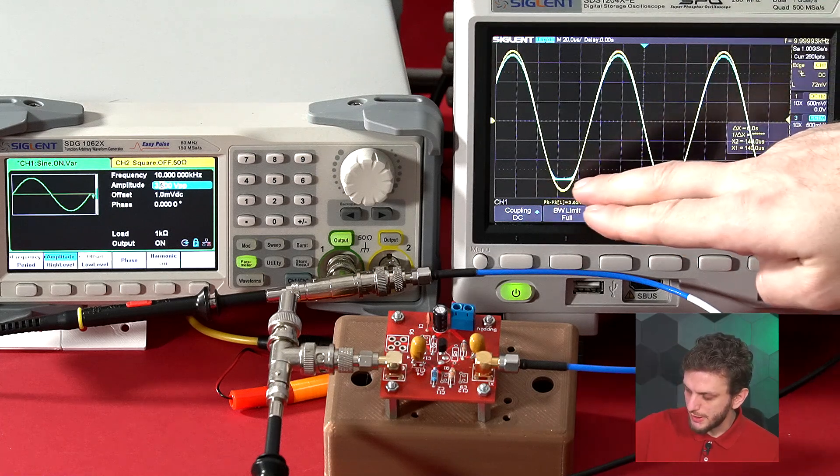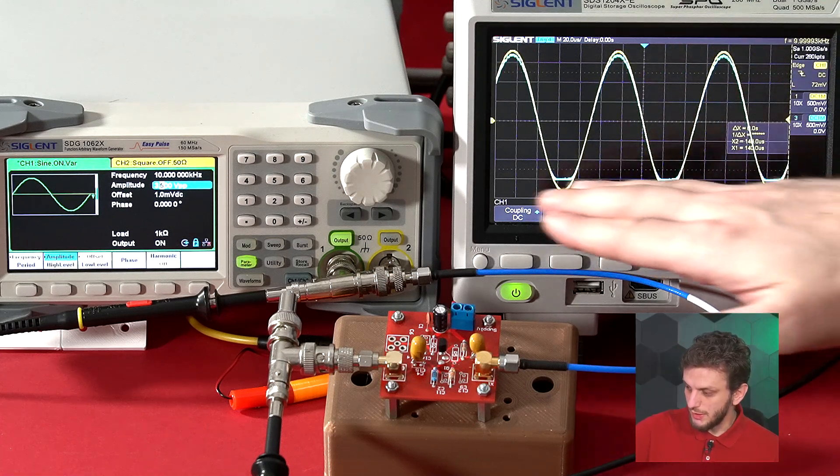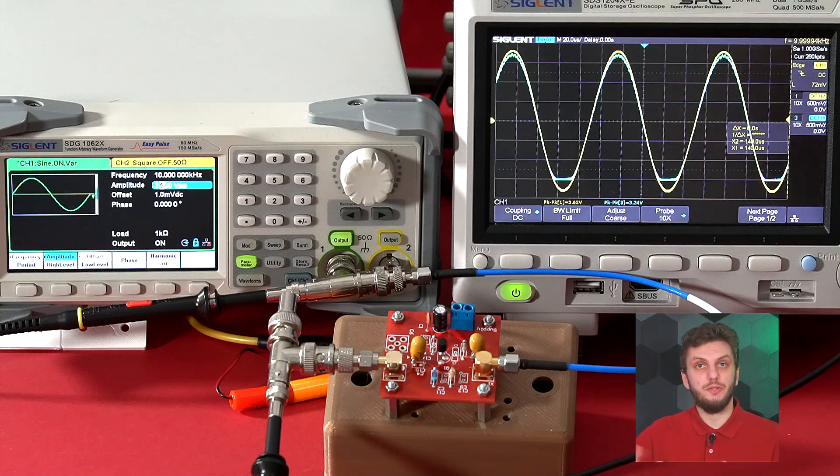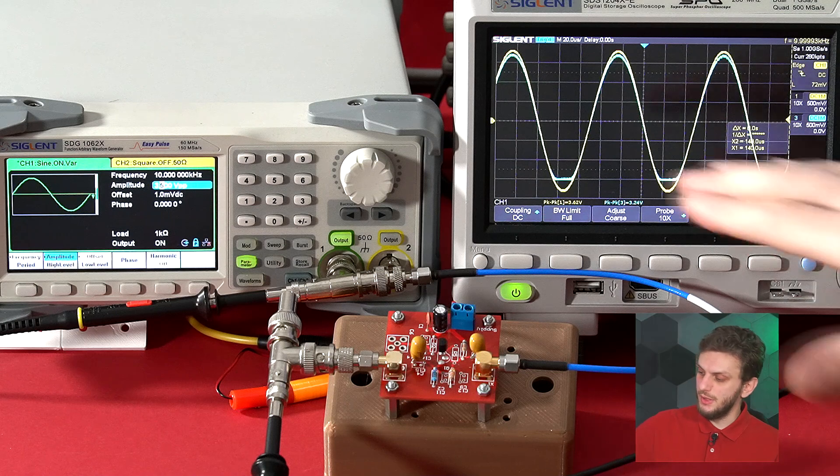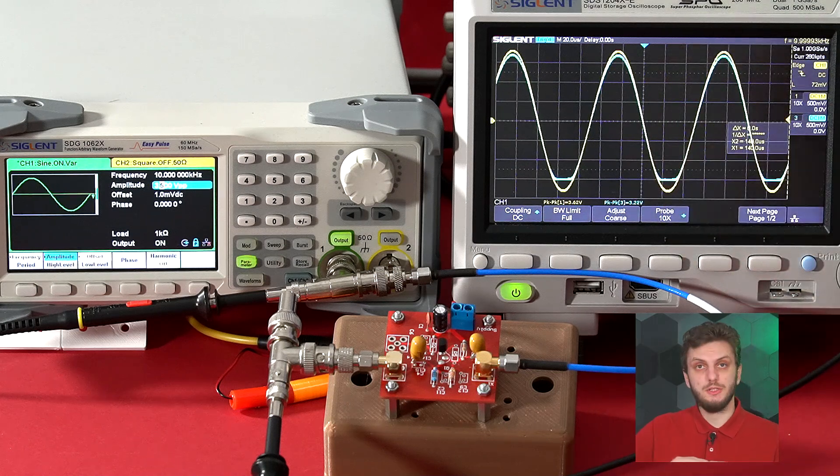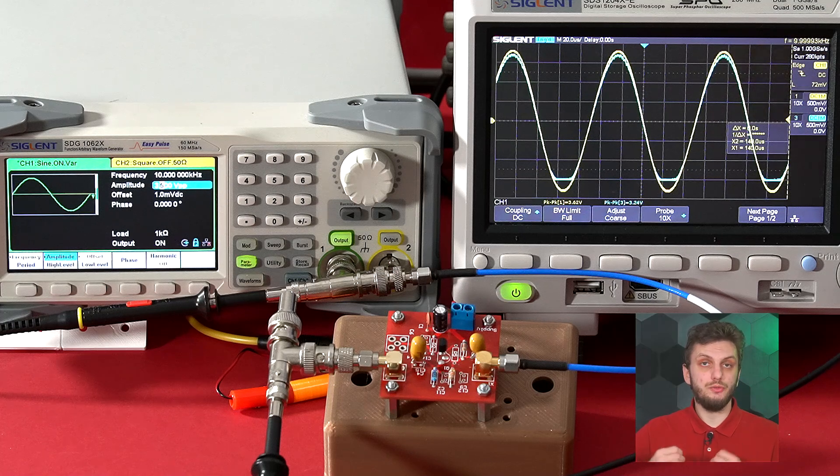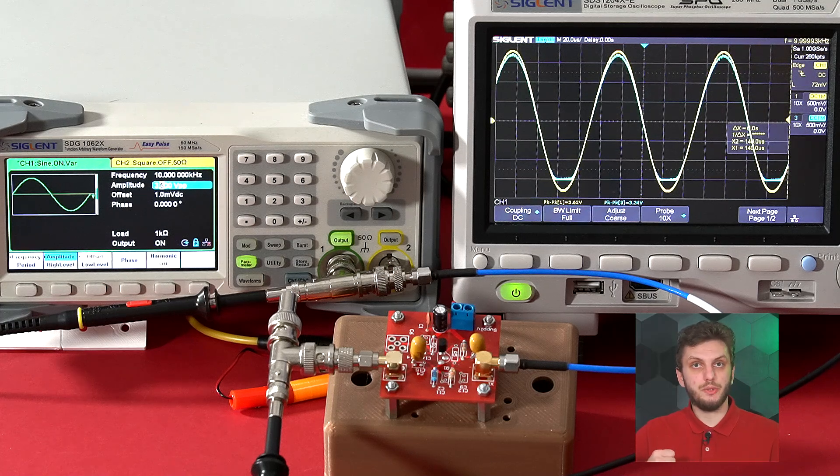But if we go a bit higher, we can start to see the bottom side of the output signal hitting a minimum value. As expected, at very high input signal voltages, the lower side of the output signal starts to flatten out. However, we can amplify the 3 volt peak-to-peak signal that we were expecting.